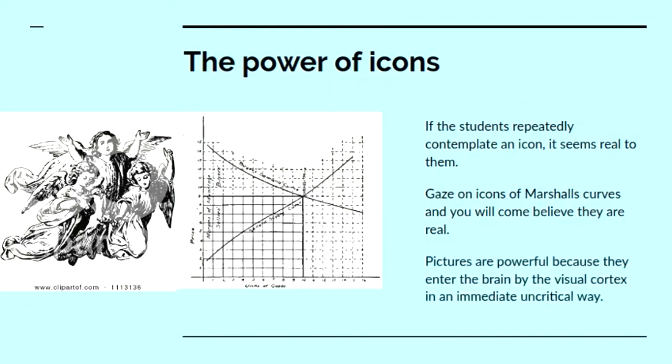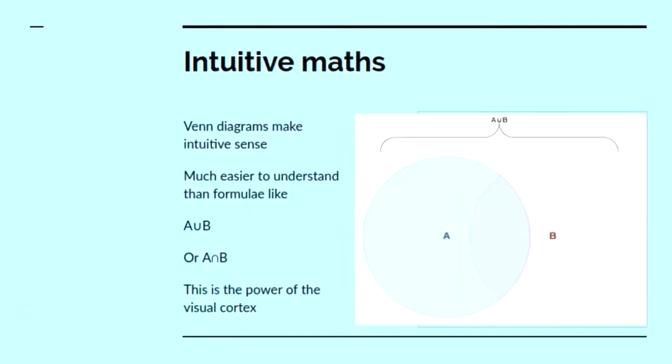Pictures are powerful, because they enter the brain by the visual cortex in an immediate and uncritical way. Sometimes this is useful in maths. This is why Venn diagrams are easier to work with when teaching set theory than using formal set theory. It's much easier to understand, because it enters directly into the highly parallel part of our brain, the visual cortex, which is the most powerful information processing section of our brain. But it is an intuitive information processing system. It's not a deductive and critical system.